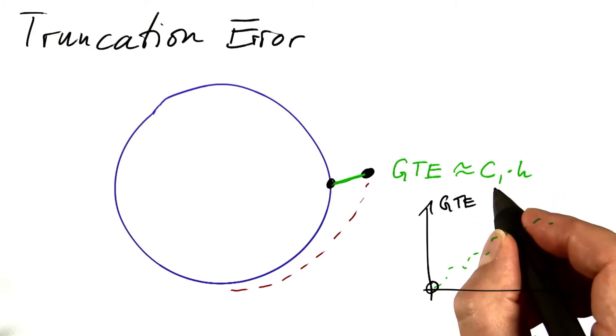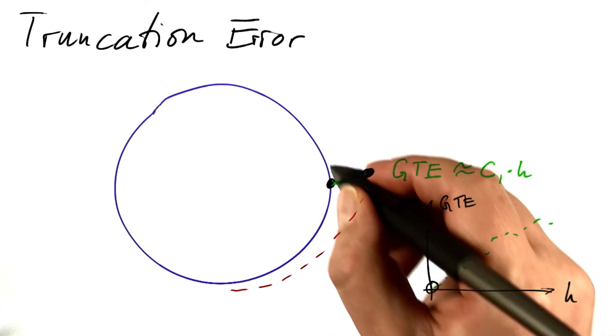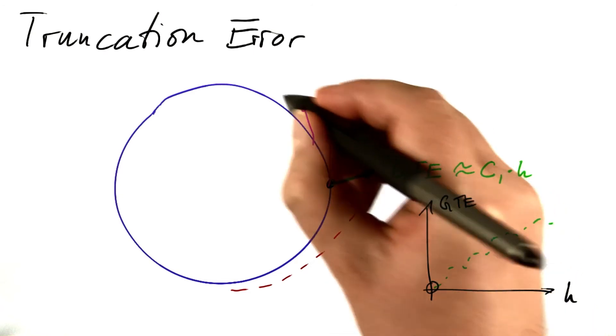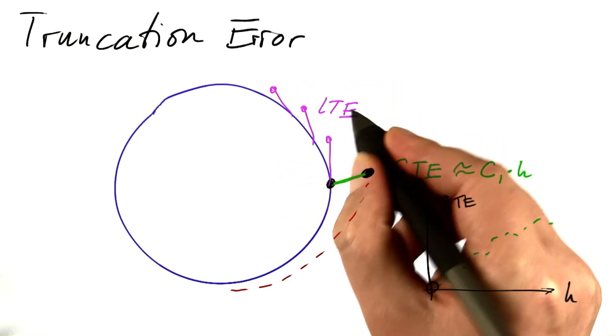Be aware that this constant is not a constant when it comes to changing the time. When there's a global truncation error, there's of course also a local truncation error. That's the error that we're making in every step. See the supplementary material for the local truncation error if you're interested.